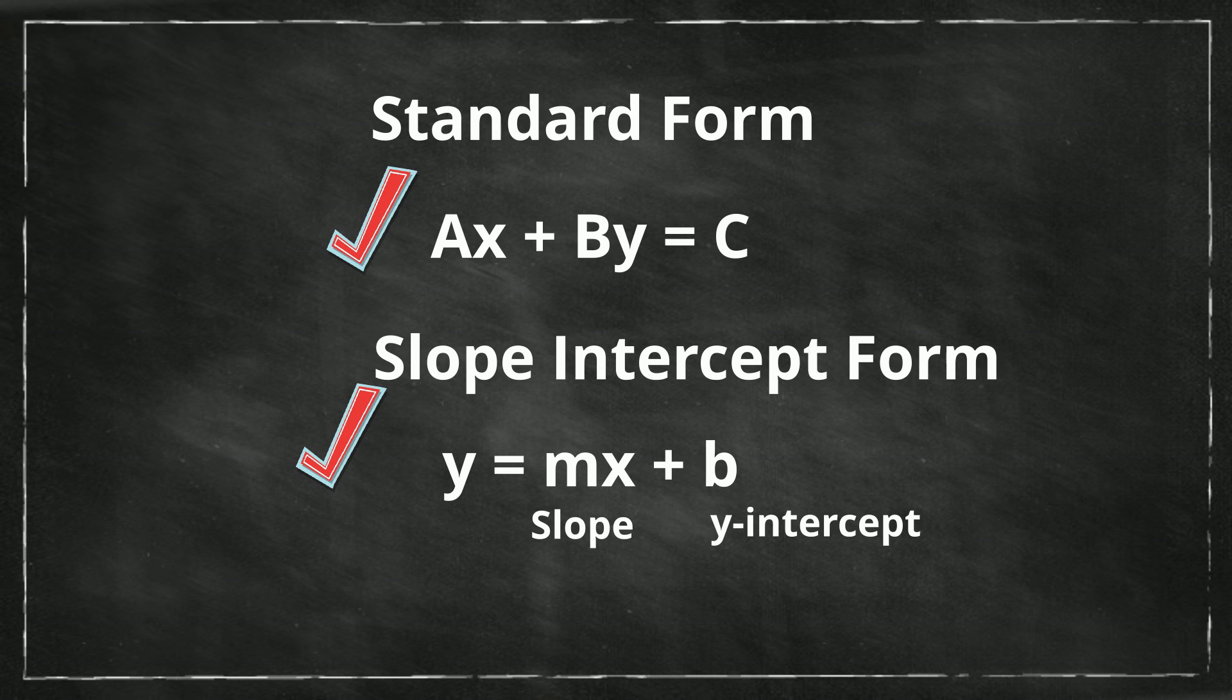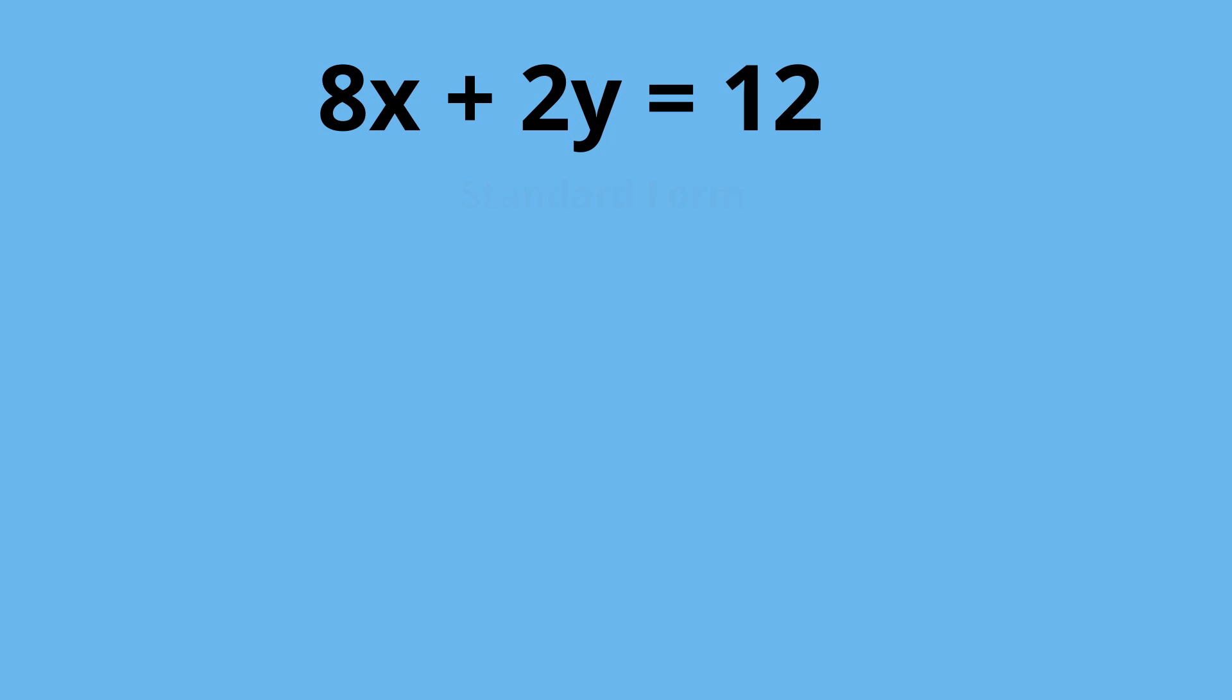Let's get started. We have this equation: 8X plus 2Y equals 12. First, we need to get Y by itself. I'm going to circle the 2 to kind of indicate Y is going to be by itself.